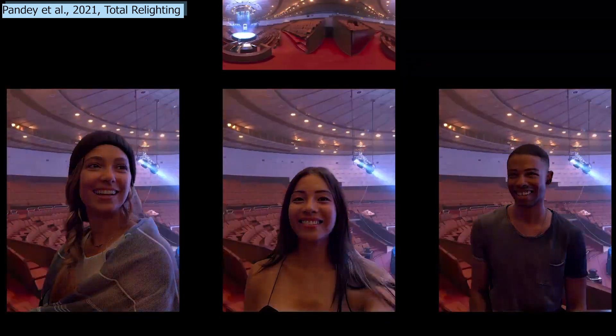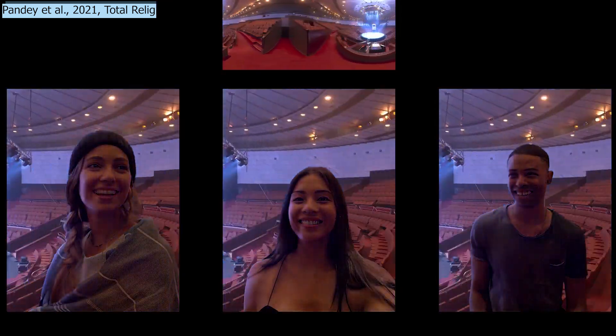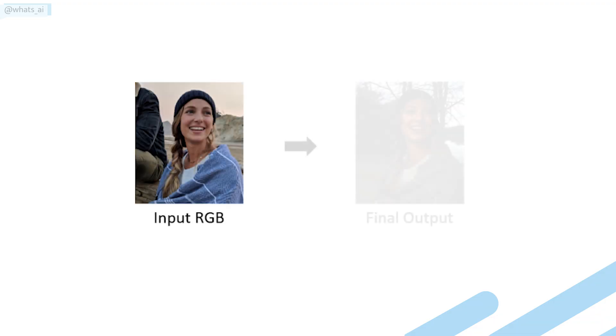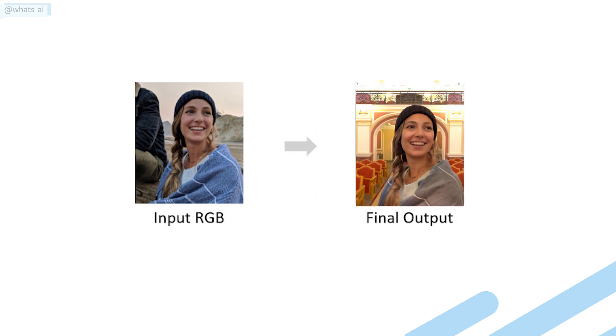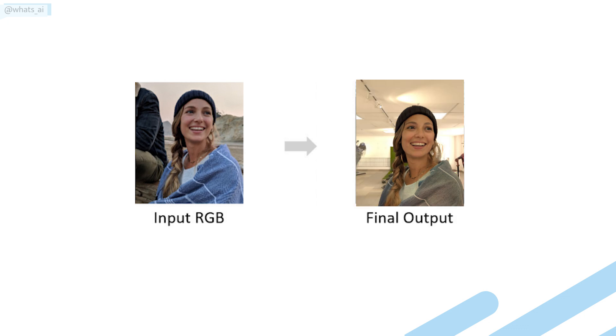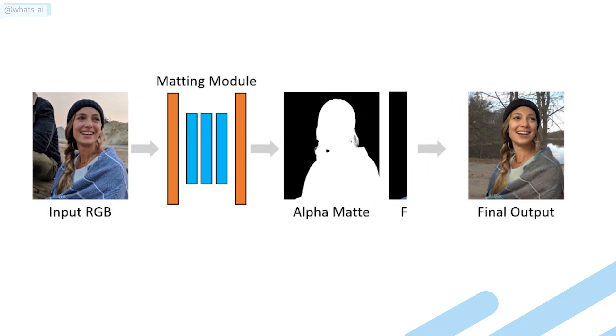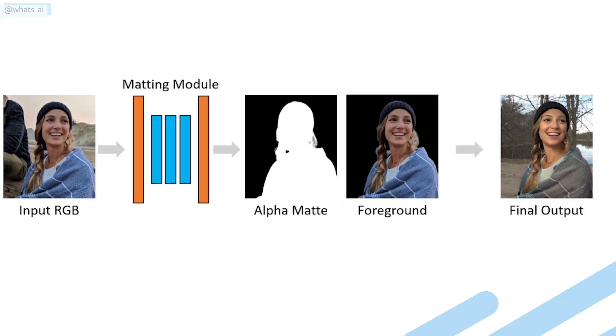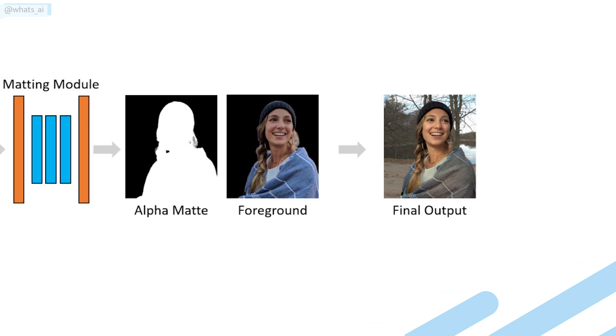Well, this is what Google Research is trying to achieve with this new paper called Total Relighting. The goal is to properly relight any portrait based on the lighting of the new background you add. This task is called Portrait Relighting and Background Replacement, which, as its name says, has two very complicated subtasks. First, Background Replacement, meaning that you will need to accurately remove the current image's background to only have your portrait. And second,